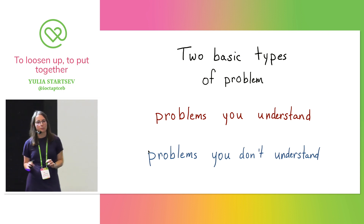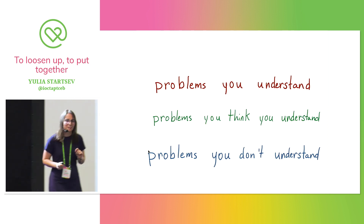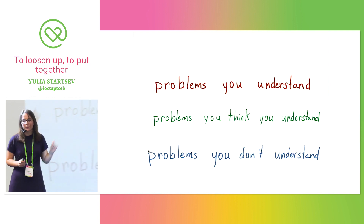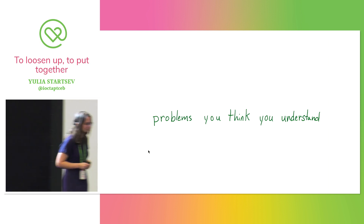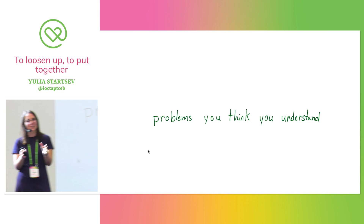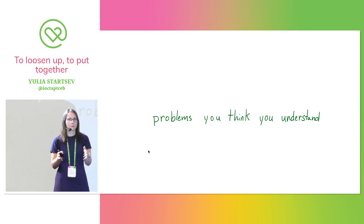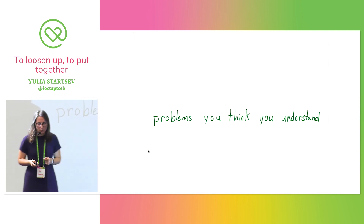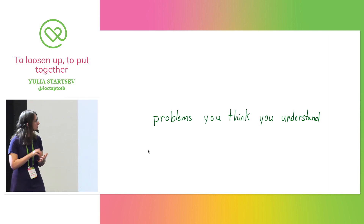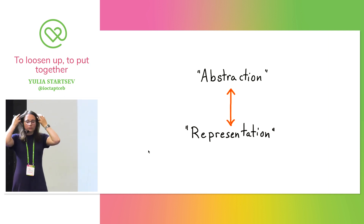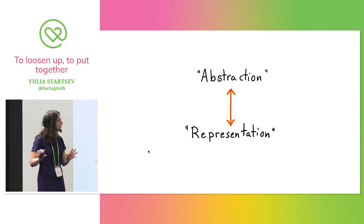There are really three basic types of problems: problems you understand, problems you don't understand, and the ones you think you understand but don't. Or rather, there's really just this one — we all think we understand the problem, but in reality, not so much. So let's talk about two specific parts of that question: problems of abstraction and problems of representation.